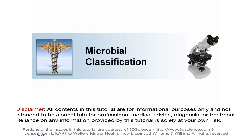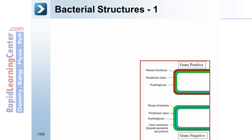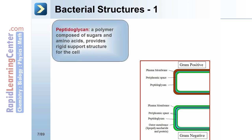Let's get started with a review of microbial classification. We begin with a look at bacterial structures. The outer region of the cell contains peptidoglycan, a polymer composed of sugars and amino acids, which provides a rigid support structure for the cell and protection from osmotic pressure imbalances.